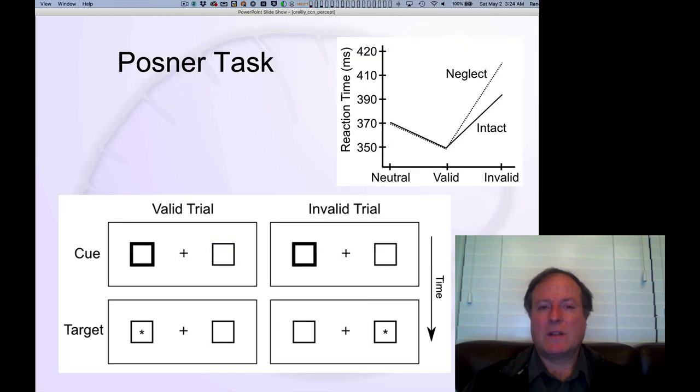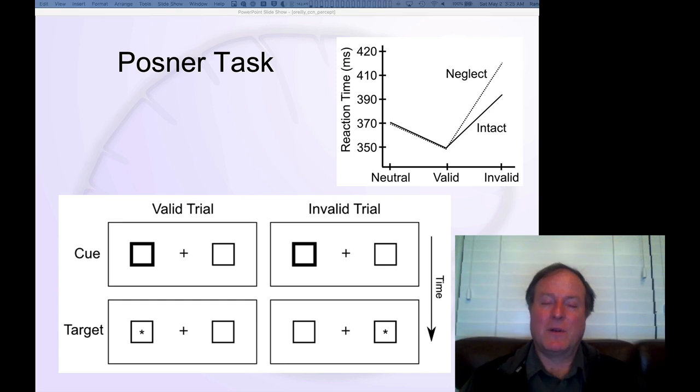One of the most common tasks used to study visual attention in general and also these patients with neglect is the Posner spatial cueing task, named for Michael Posner, a very influential cognitive psychologist.